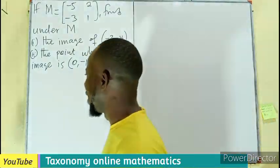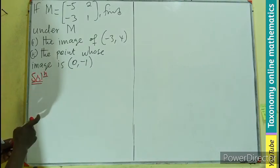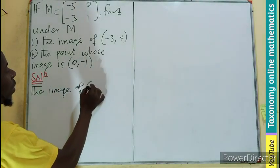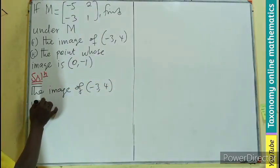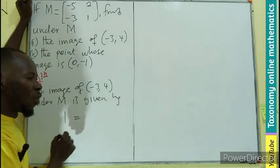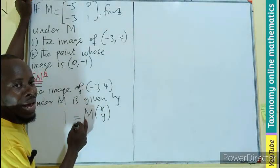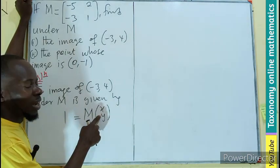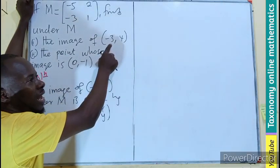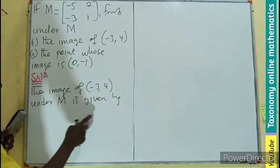So we know that to find the image under the matrix, we are going to have the image of our (-3, 4), and the M will be given by - don't forget - the image is equal to the matrix times the point of translation. So whatever point that is translating the matrix to become the image.